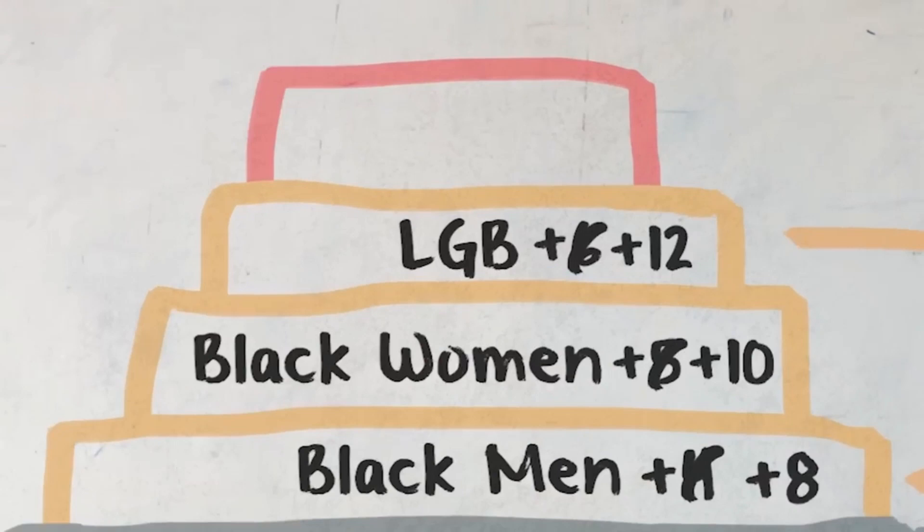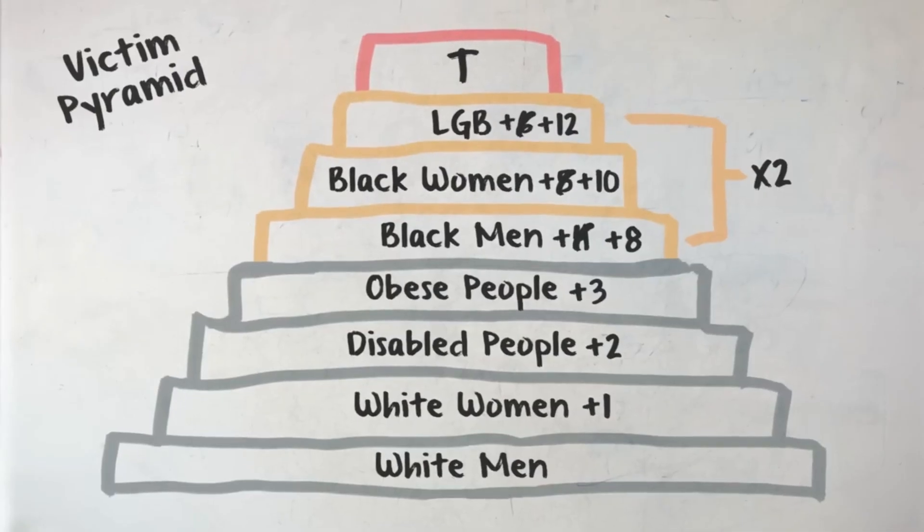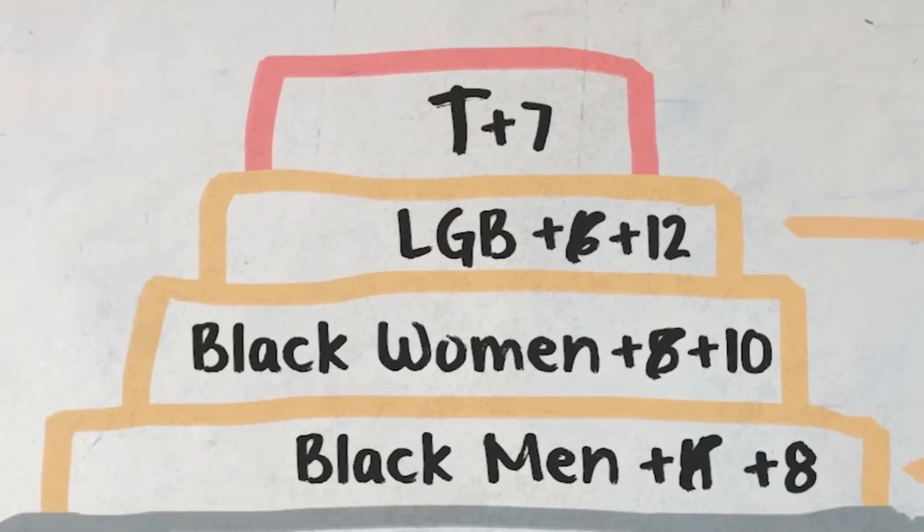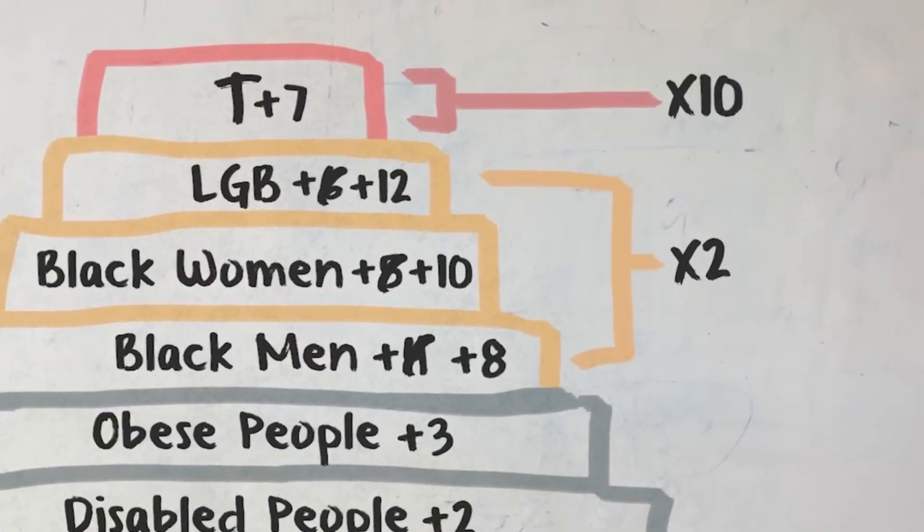I haven't mentioned the T. That's because the T sits at the very top of the pyramid — nobody can out-victim the T. They are the victims who are the victims of all other victims, standing at the pinnacle of the victim hierarchy with the most victim points and therefore the most power. Here we introduce the Apex Victim Multiplier, AVM. Whatever group sits at the top earns their seven victim points, but then also earns a multiple of ten, which means trans people have not seven or even fourteen victim points, but seventy.